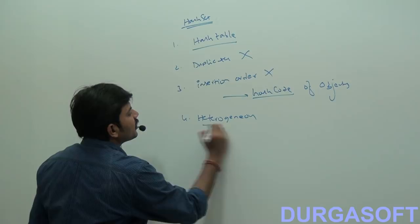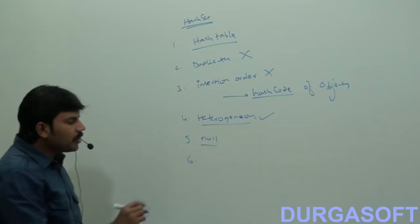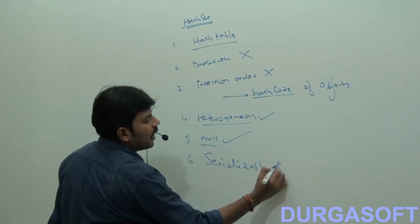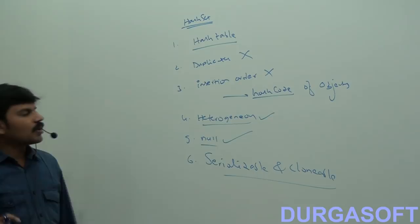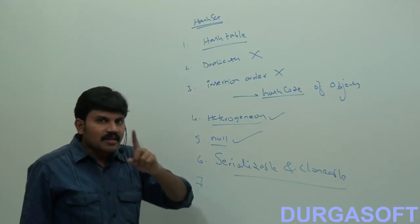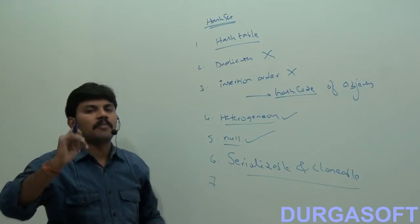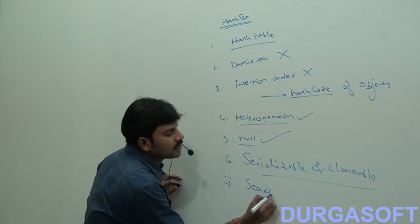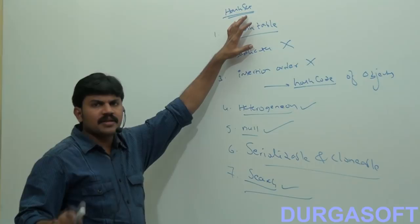Heterogeneous objects are allowed in HashSet — no problem at all. Null insertion is possible as well. Since objects are stored based on their hash code, the search algorithm becomes easy. If our frequent operation is a search operation, HashSet is the best choice.